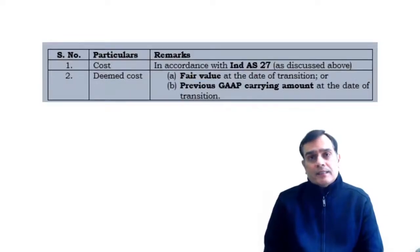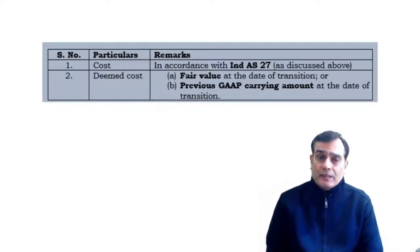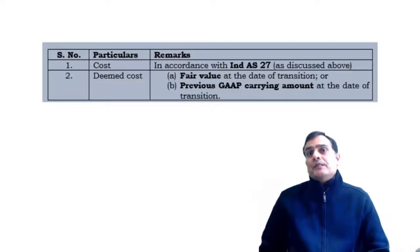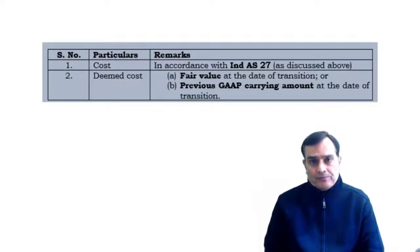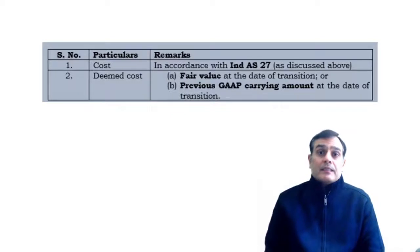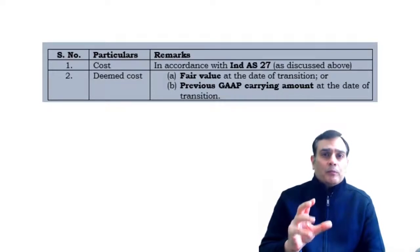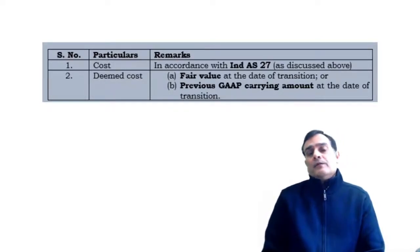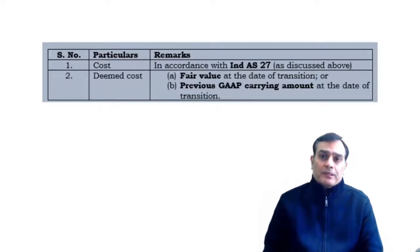As you can see in this particular chart, there are two options available at the transition date — that is, the date when the first opening Ind AS balance sheet is to be prepared. Ind AS 101 says you can either take the investment at cost, which is computed as per Ind AS 27. The second option is that it allows the use of what we call a deemed cost — just like we had in the videos related to property, plant and equipment, right-of-use assets, and investment property where deemed cost is allowed. Even in terms of investments, a deemed cost is allowed.